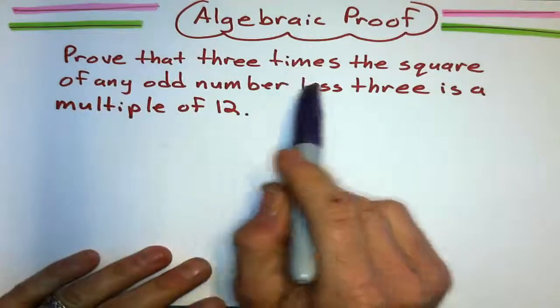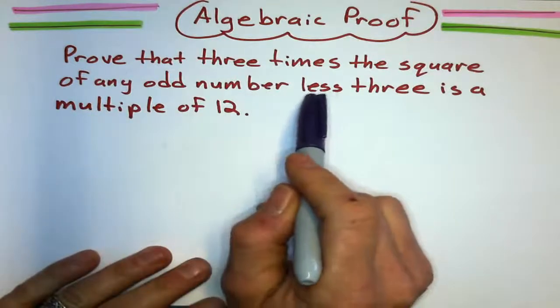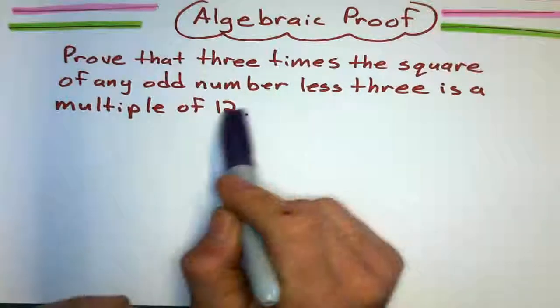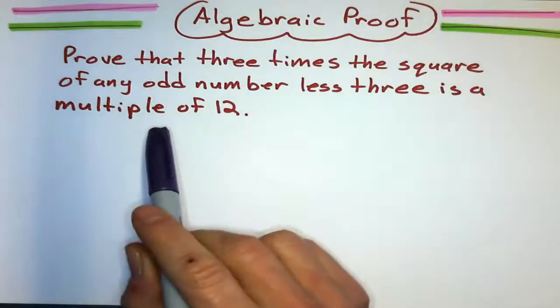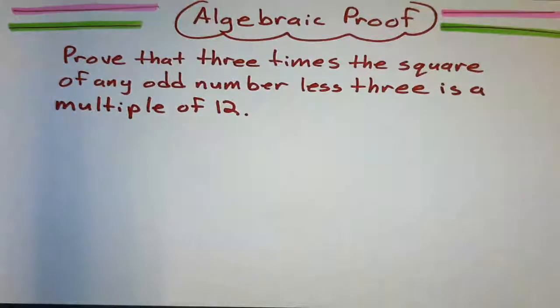Okay, algebraic proof. We're going to prove that 3 times the square of any odd number, less 3, meaning minus 3, is going to be a multiple of 12. Otherwise known as divisible by 12. How do we figure that out?